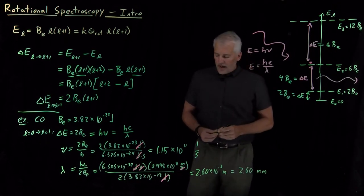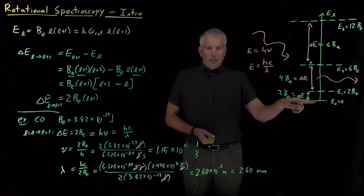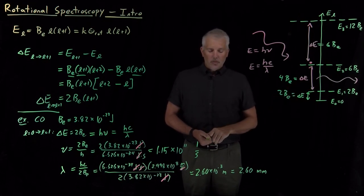So that would be the wavelength of light—the wavelength of a photon needed to be absorbed by a non-rotating carbon monoxide molecule to make it rotate the smallest amount that a quantum mechanical carbon monoxide molecule can rotate.